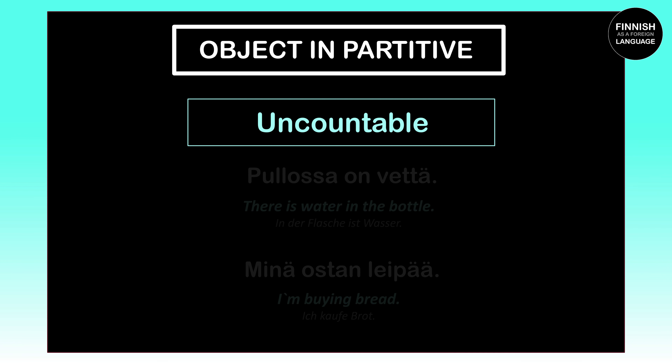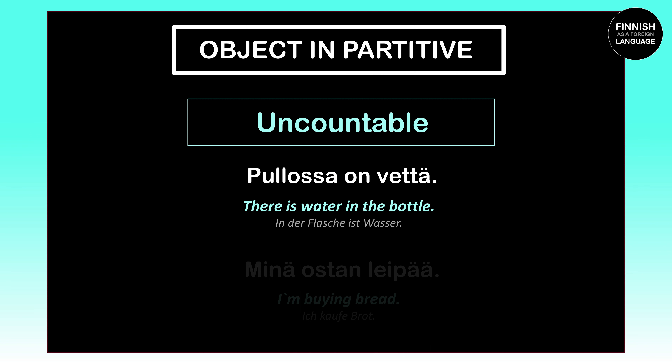The object can also appear in the partitive case when we're talking about something that is uncountable. For example, 'Pullossa on vettä' means 'There's water in the bottle.' Our object here is the water, which is 'vesi' in Finnish. Because water is uncountable, we have to put it into the partitive case. That is why 'vesi' becomes 'vettä,' which is the partitive case of 'vesi.'